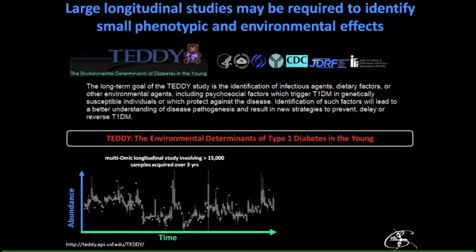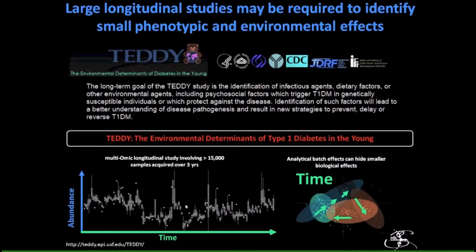The goal is to identify the very small effect leading some to become type 1 diabetic while protecting others. The West Coast Metabolomics Center was tasked with all the metabolomic analysis — primary metabolites and lipids. This is probably one of the largest metabolomic studies I'm aware of: carried out over three years with over 15,000 samples. One immediate challenge is how to maintain equivalent acquisition conditions over a full three-year period, as instruments, technicians, and everything else can change.